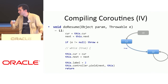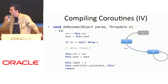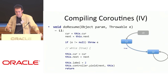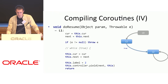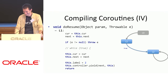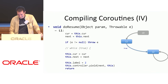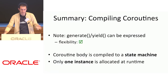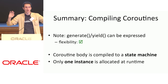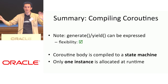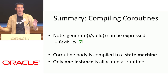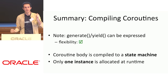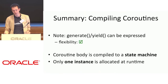We nullify variables that are no longer needed — we don't like memory leaks. To summarize: we can express generate/yield as well as async/await, so it's not a single-use-case feature. A coroutine body is compiled to a state machine, and there's only one instance allocated for the whole thing.